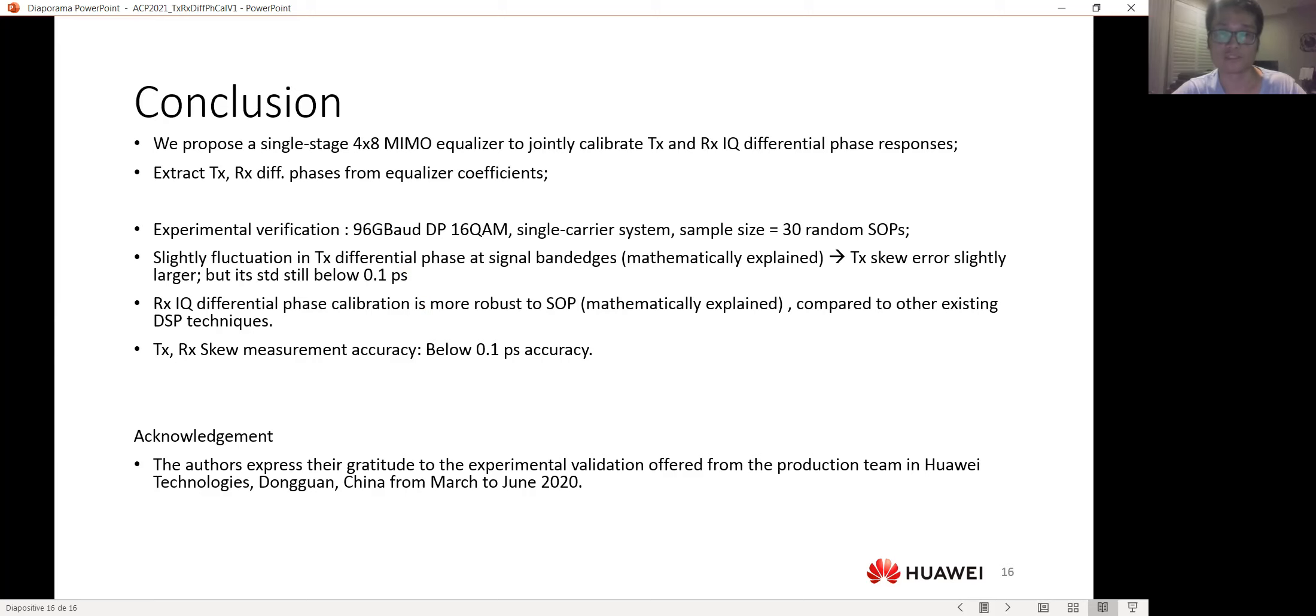And we found that our transmitter differential phase may suffer from more fluctuation at high frequency. And therefore, for the skew measurement, we may have a slightly higher error, but still all the error is below 0.1 picoseconds. While our receiver IQ differential phase calibration is very robust compared to other existing methods to SOPs. And still, for our receiver and transmitter skew measurement, our accuracy is pretty high, and the error is still below 0.1 picoseconds.